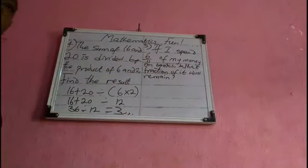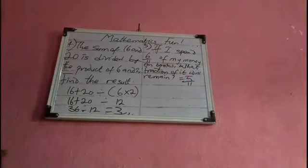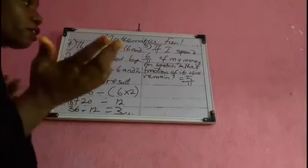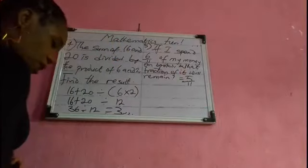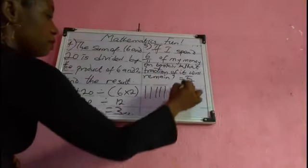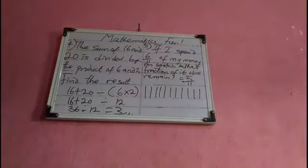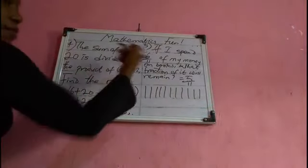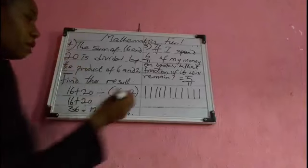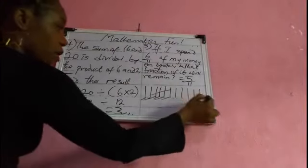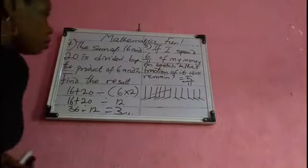The answer is 5 over 11. The reason is we are dealing with 11 parts. Represent it with 11 strokes — one through eleven. If I spend 6 out of 11, I cancel 6 strokes. How many do I still have? Counting: 1, 2, 3, 4, 5 — I still have 5 out of 11, so the answer is 5/11.